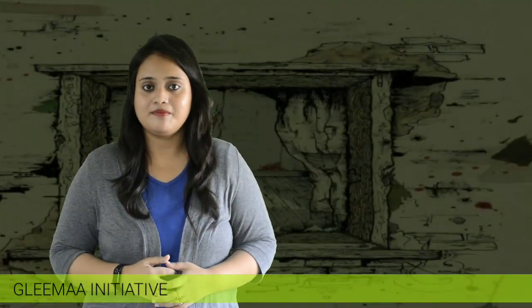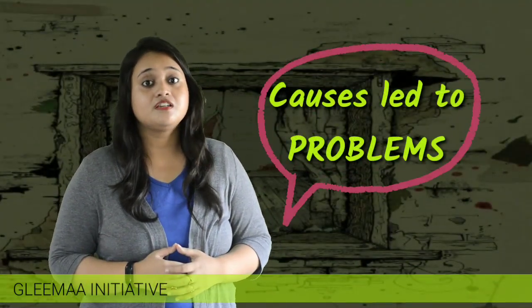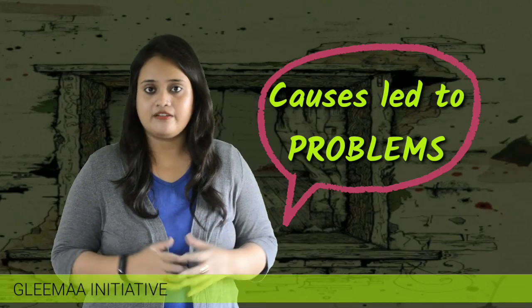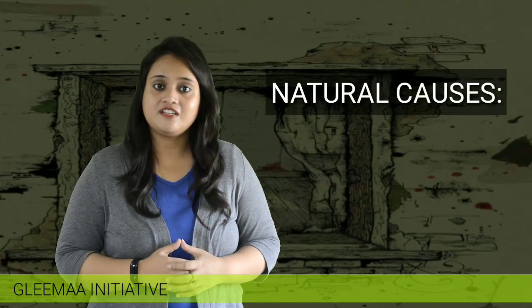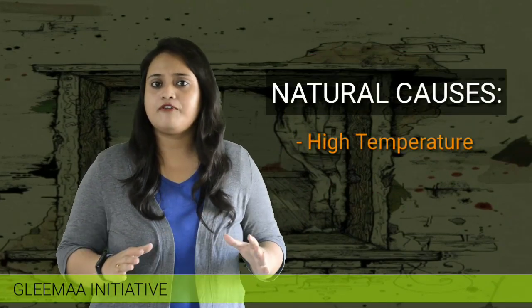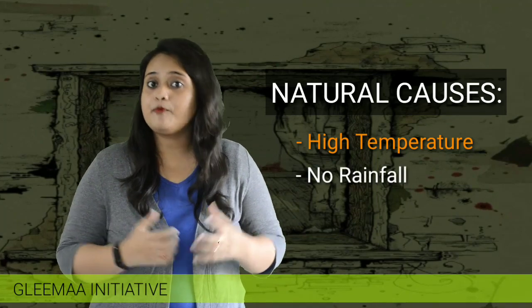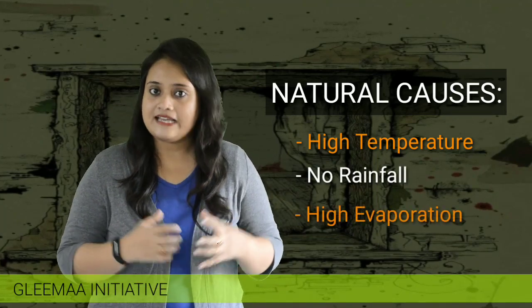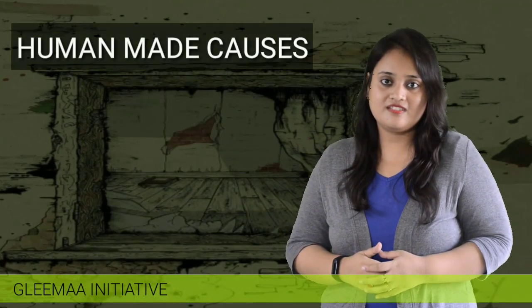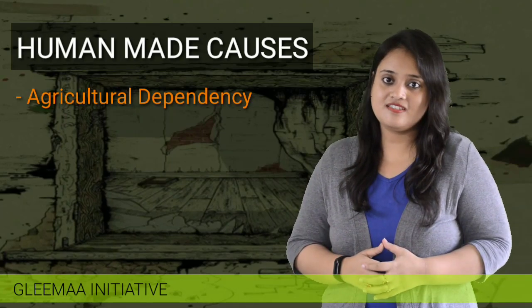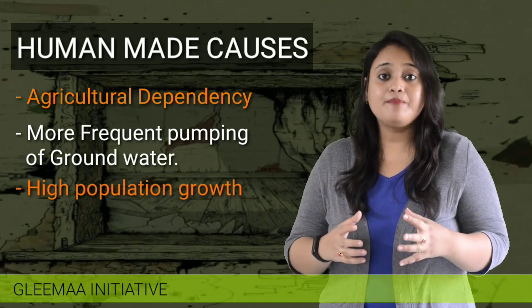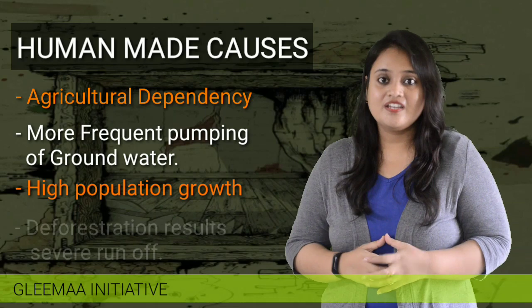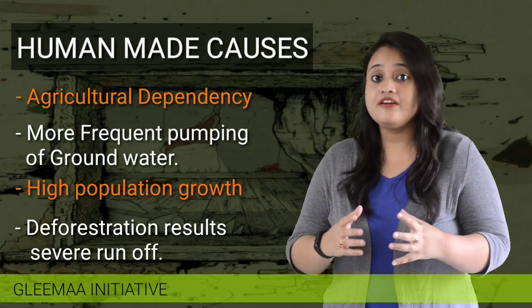Now, coming to the problems. There are various major problems which lead to ground water deflation. Among these, the most important are natural causes, which include high temperature, no rainfall for many years, high evaporation, and high salinization. Coming to the human-made causes, these include agricultural dependency, more frequent pumping of ground water, high population growth, and deforestation which causes severe runoff.